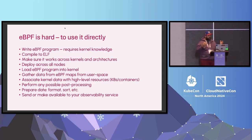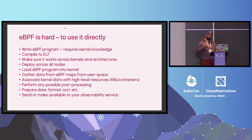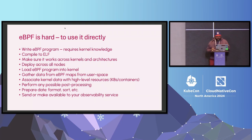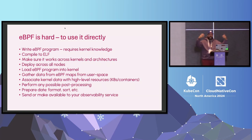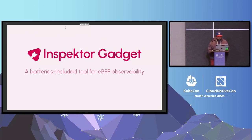You'll have to do some kind of mapping to high-level resources. You'll need to perform post-processing, because there are limitations to what you can do in eBPF — for example, stream processing if you're working with DNS. Then you have to prepare that data and export it to an observability service. Inspector Gadget does all of those things.